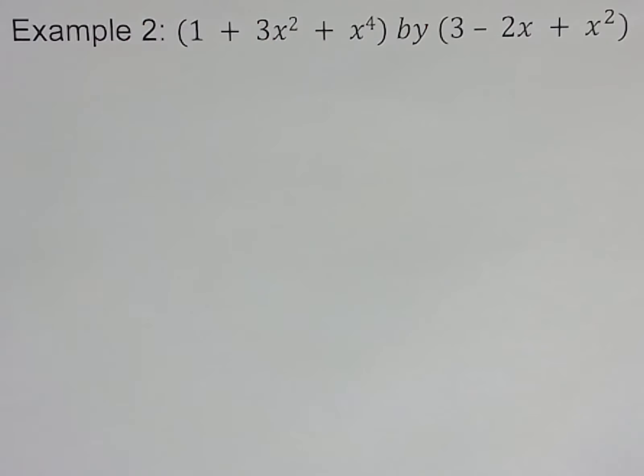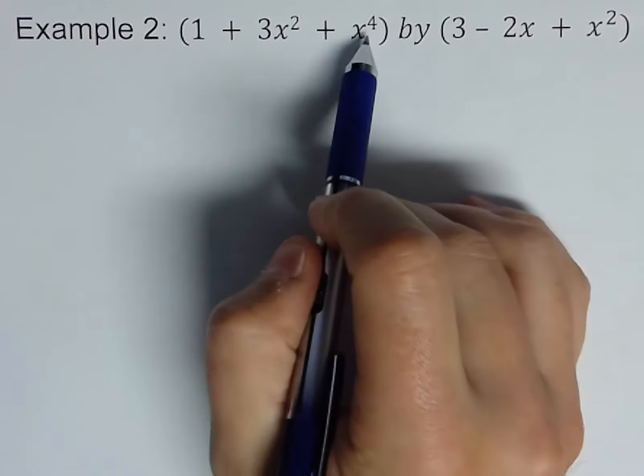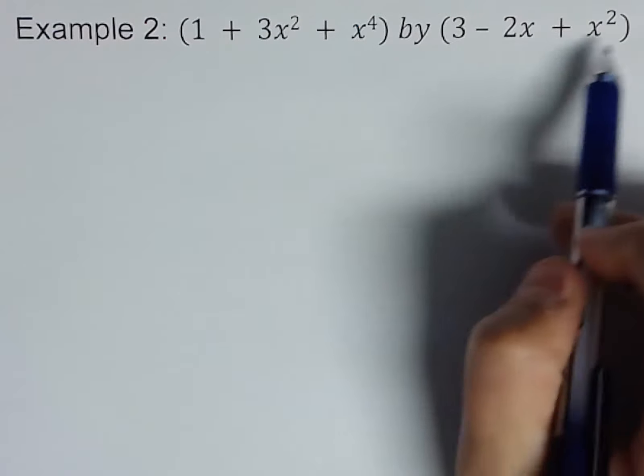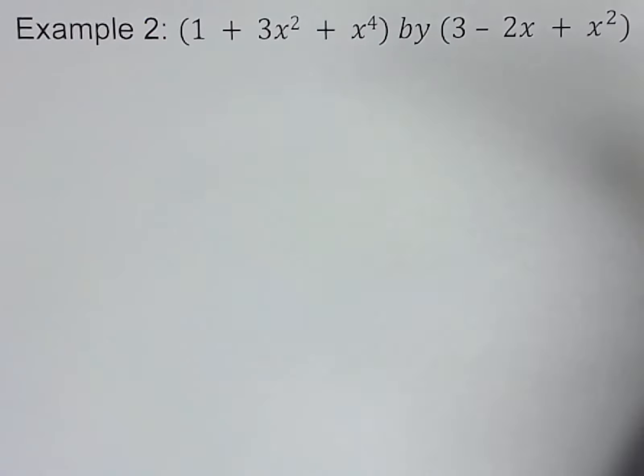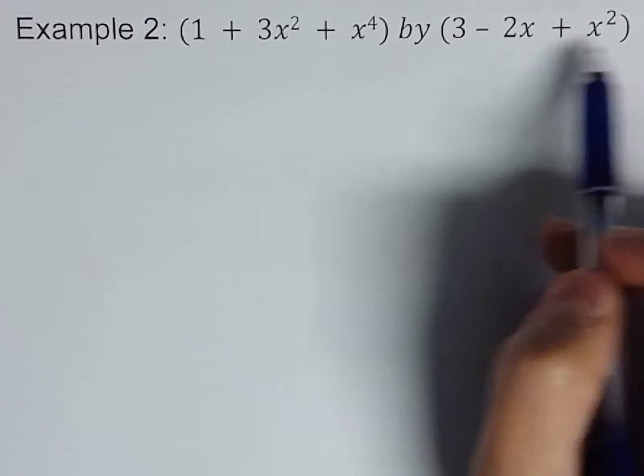Example 2, dividing polynomials using long division. We've got a fourth degree polynomial divided by a second degree polynomial. These are a little bigger than the last example. Also notice, not in descending order.